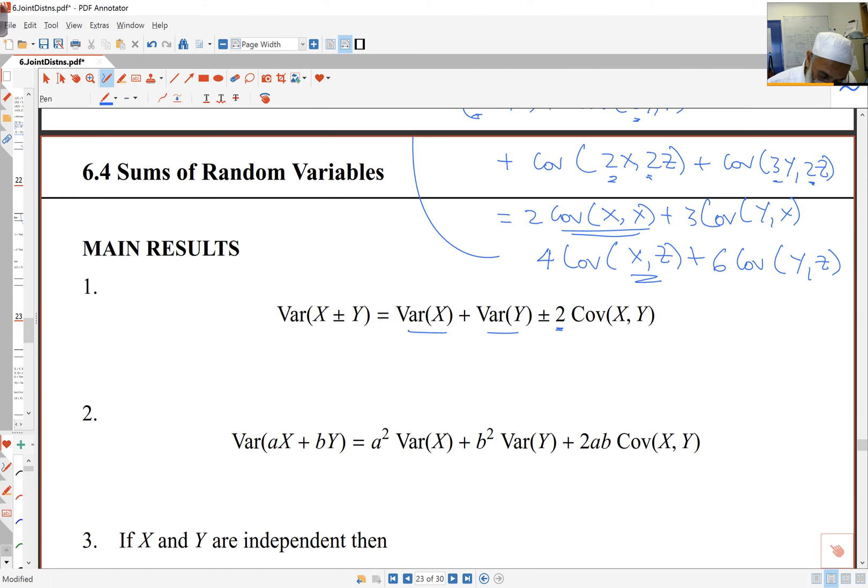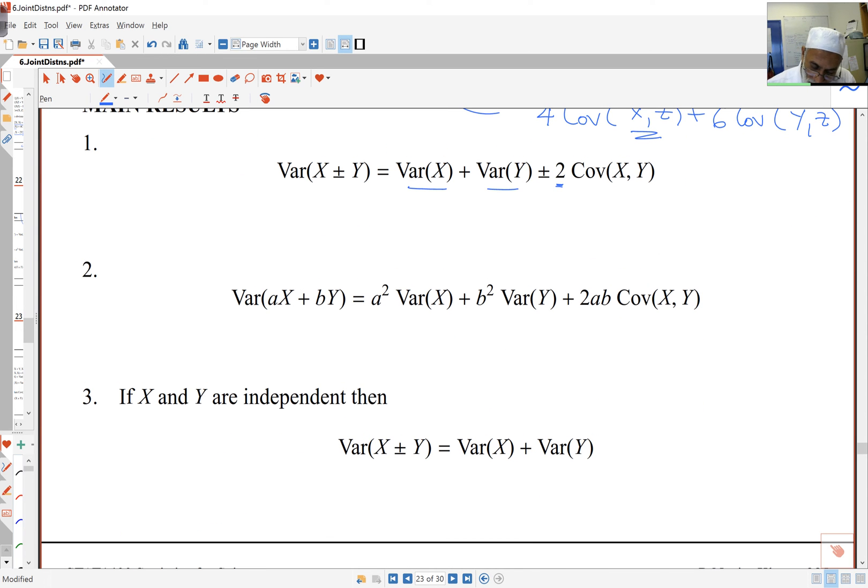If I have a minus, the minus goes with the covariance. So variance of x minus y is still variance of x plus variance of y, but minus twice the covariance. If I've got some constants, ax and by, they get multiplied in the usual way. This becomes a squared variance of x, b squared variance of y, and the cross product is a times b times the covariance.